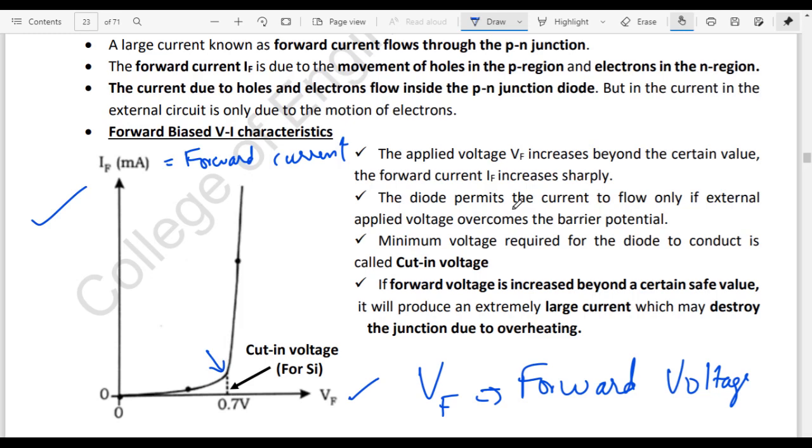Diode permits the current to flow only if external voltage applies. External voltage overcomes the barrier potential, that is the barrier potential, silicon barrier potential 0.7V. So when the 0.7V is cut.